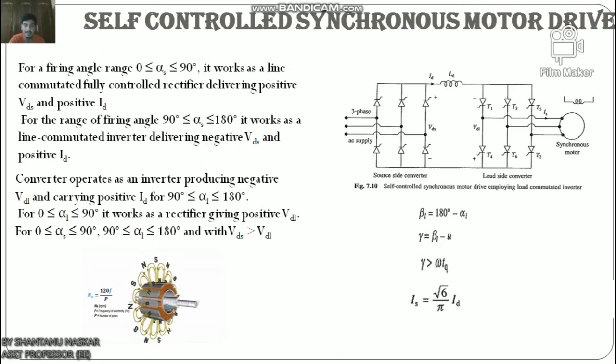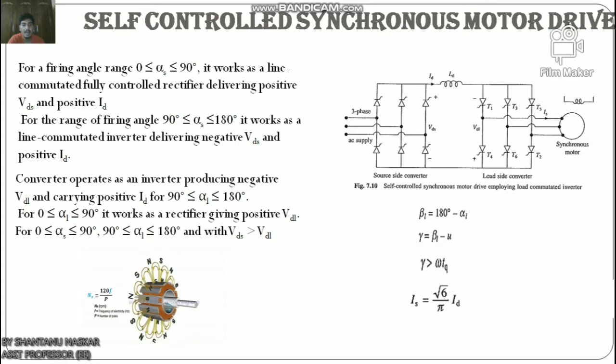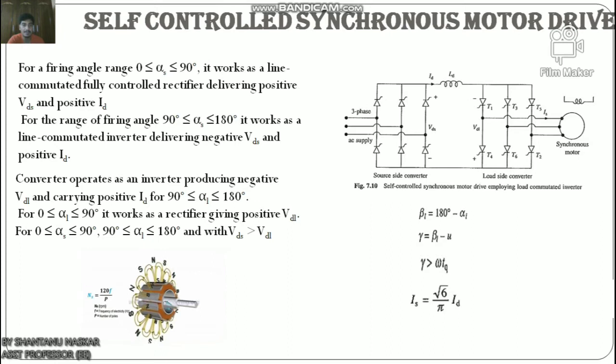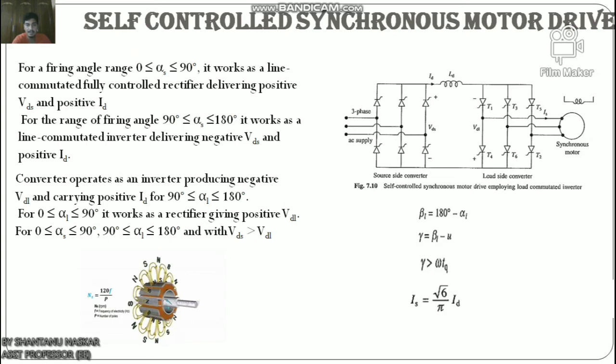If commutation overlap is ignored, the input AC current of the converter lags behind the input AC voltage by angle α1. Since the motor input current has an opposite phase to the converter input current, the motor current will lead the terminal voltage by angle β1; therefore the motor operates at leading power factor. A lower value of β1 gives a higher motor power factor and lower inverter rating. The commutation overlap for the load-side converter depends on the sub-transient inductance of the motor. The motor is provided with damper winding to reduce sub-transient inductance, allowing operation with a substantially low value of β1.